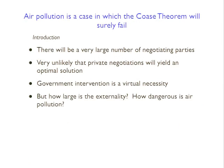Because of this, air pollution is basically a case in which the Coase theorem will almost always fail. In any case involving air pollution, there are going to be a very large number of negotiating parties because a very large number of people are affected. So it's very unlikely that private negotiations are going to yield an optimal solution. You can't get all affected parties in a room to work out a deal. Government intervention is basically a necessity if you want to attack this problem.